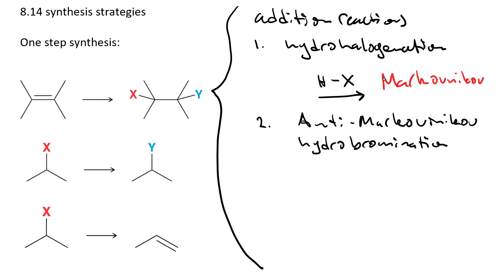If you want anti-Markovnikov hydrohalogenation, you can use HBr and peroxide, ROOR.